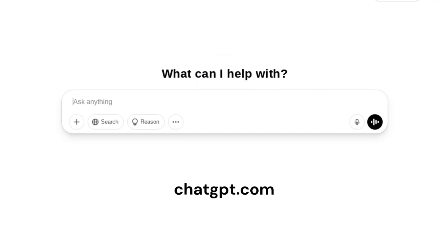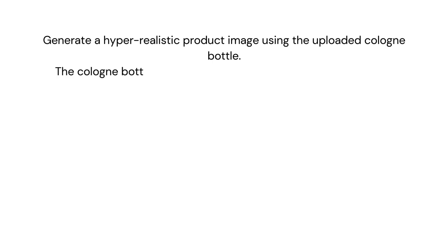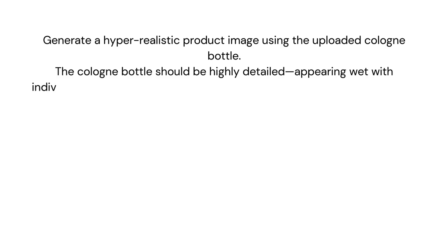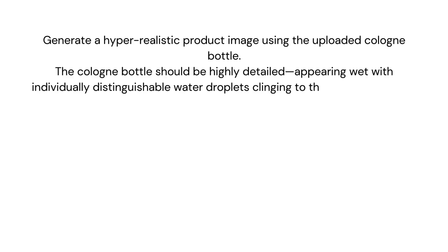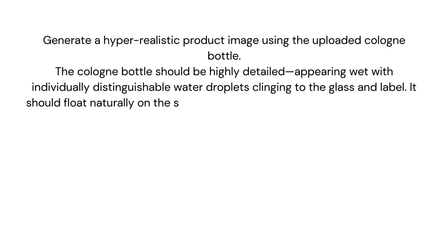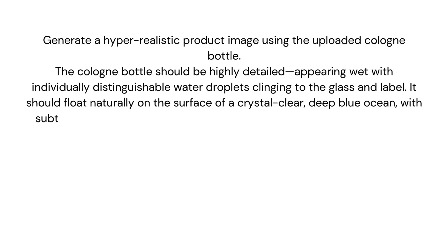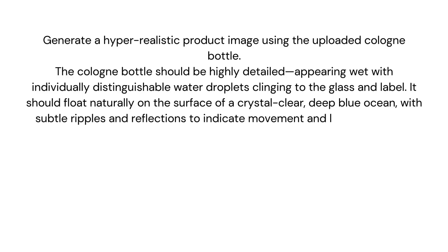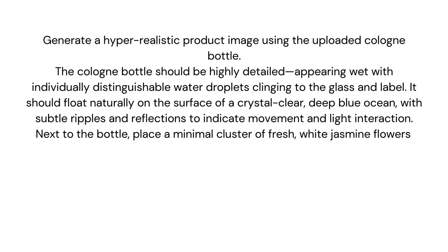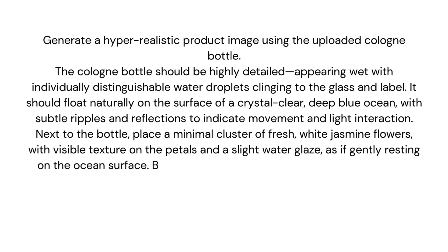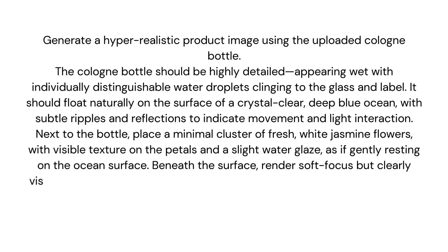Once I gained more clarity on what visual story I wanted to tell, I went to ChatGPT to create an image. I attached an image of the fragrance bottle and submitted this prompt: 'Generate a hyper-realistic product image using the uploaded cologne bottle. The cologne bottle should be highly detailed, appearing wet with individually distinguishable water droplets clinging to the glass and label. It should float naturally on the surface of a crystal clear, deep blue ocean with subtle ripples and reflections to indicate movement and light interaction. Next to the bottle, place a minimal cluster of fresh white jasmine flowers with visible texture on the petals and a slight water glaze.'